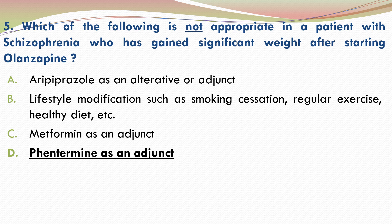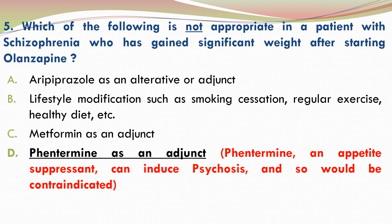Phentermine as an adjunct is not appropriate in a patient with schizophrenia who has gained significant weight after starting olanzapine. Although phentermine as an appetite suppressant can result in significant weight loss, it is contraindicated in patients with schizophrenia as it can induce psychosis.